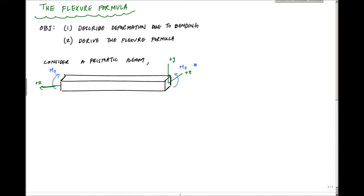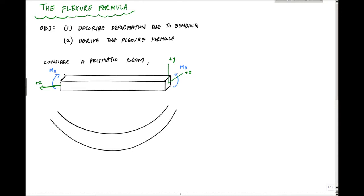I've drawn it so that there's compression at the top and tension at the bottom when this thing bends. It's going to bend like this — I'm going to exaggerate the deformed shape here, using a piece of Tupperware to illustrate the bent shape.